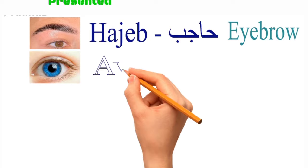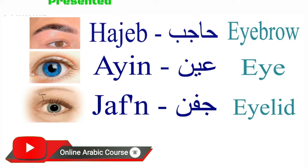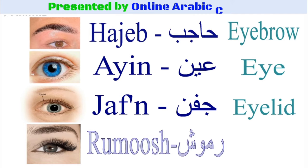Aain means eye. Jafn means eyelid. Rumush means eyelashes.